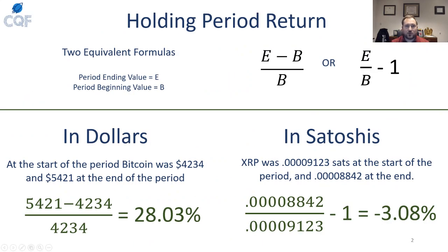So let's jump right into the very basic: the holding period return. There are two ways to calculate this. What a holding period return is — let's say CryptoQF invests in Bitcoin at time zero at $4,234, and then closes the trade when the Bitcoin dollar amount value is $5,421. So how much did I earn? What is my portfolio or investment or trade return in that case?